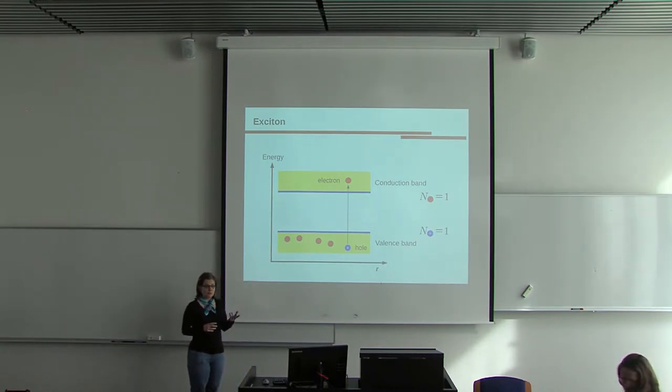Such a pair of an electron in the conduction band and the hole in the valence band is called an exciton. And those two particles may interact via Coulomb coupling.